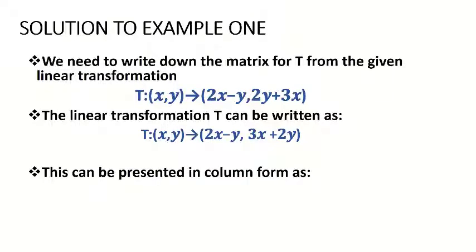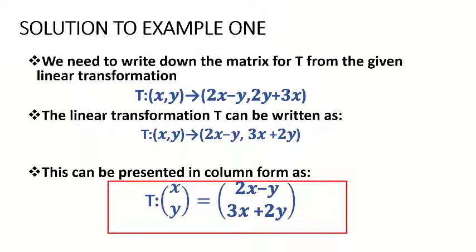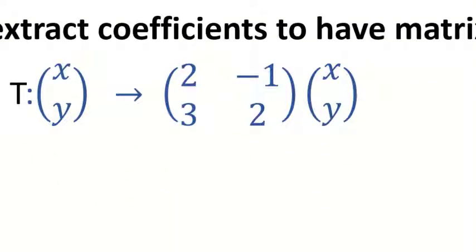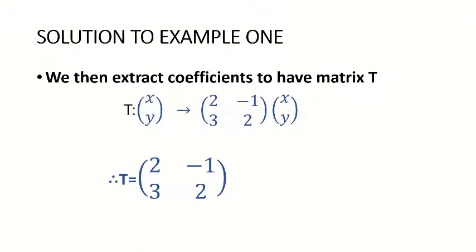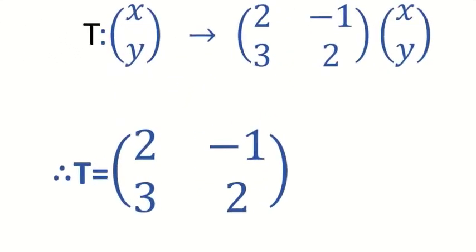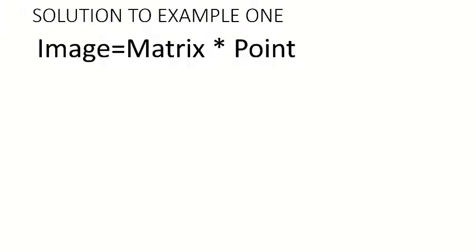We extract the coefficients to find the matrix T. So T such that XY maps onto matrix [2, -1; 3, 2] multiplied by [X; Y]. Therefore our matrix T equals [2, -1; 3, 2]. Our formula is: image = matrix × point — a very important formula.